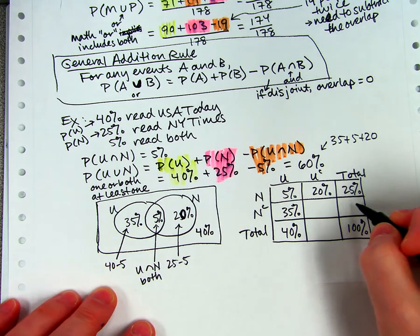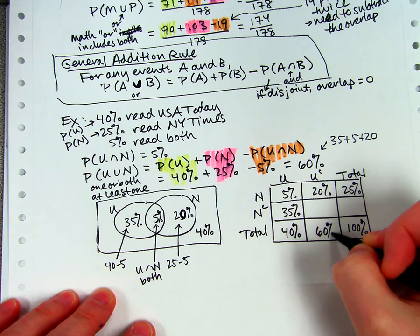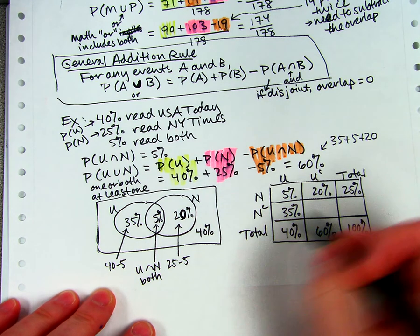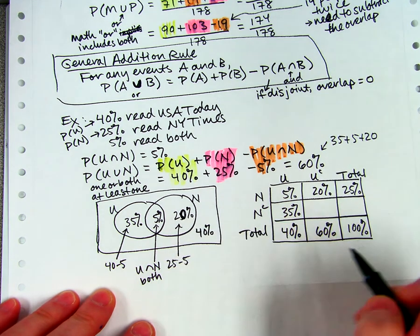And then I could subtract here also to get 60% who don't read the USA Today, and that's these two put together, the 20 and the 40.